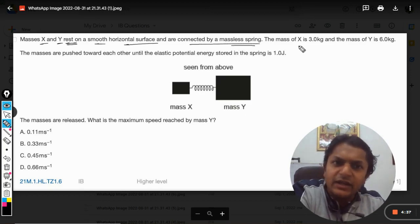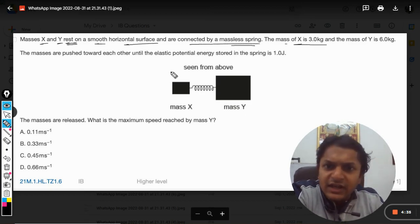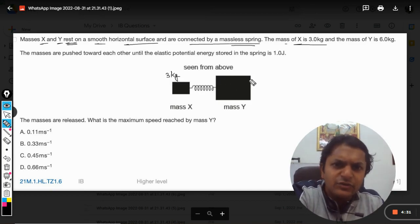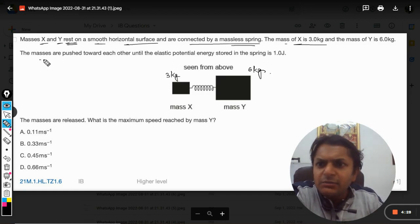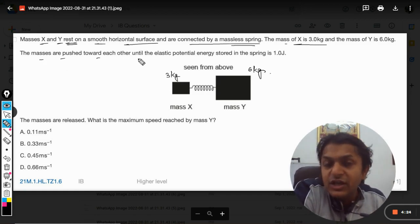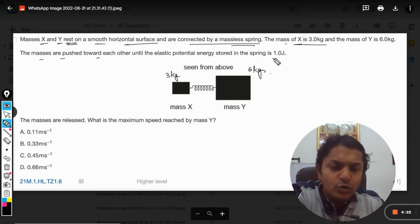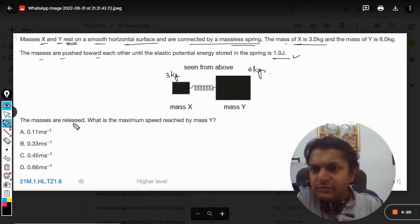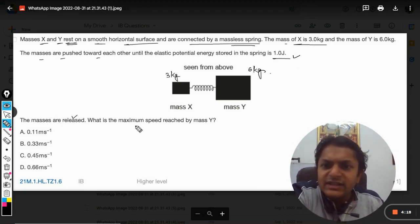The mass of X is 3 kg and the mass of Y is 6 kg. The masses are pushed toward each other until the elastic potential energy stored in the spring becomes 1 joule. The masses are now released. What is the maximum speed reached by mass Y?